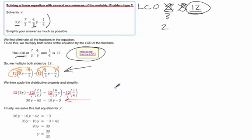Now, this is where it gets a little more challenging, but it's still easy if you think about the balance beam situation. We have a 36y, and we have a negative 42. And over here we have a 16y minus 3. I forgot my y. There we go.